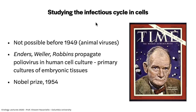The whole topic of studying the infectious cycle wasn't possible before 1949, at least for animal viruses. That's the year when three scientists — Enders, Weller, and Robbins — figured out that you could grow poliovirus in cells in culture. They used primary cultures of human embryonic tissues, made monolayers of them, and found that you could grow poliovirus in them. They received the Nobel Prize for this in 1954 — it was a huge discovery. John Enders appeared on the cover of Time magazine: 'Medicine gains on viruses.'